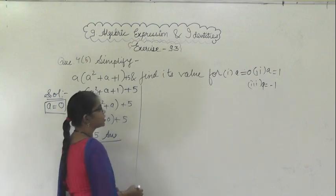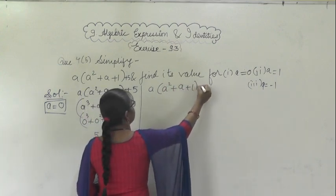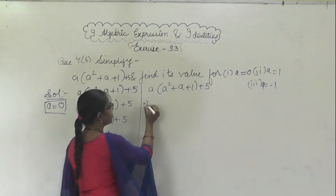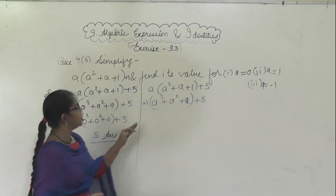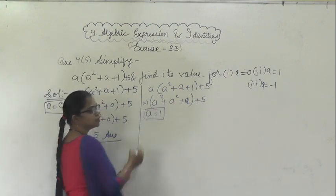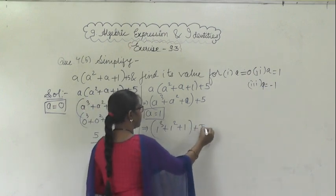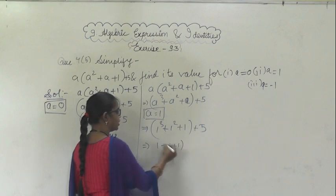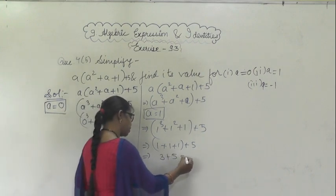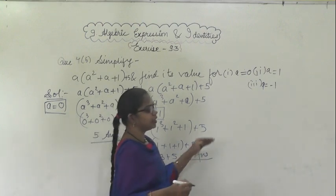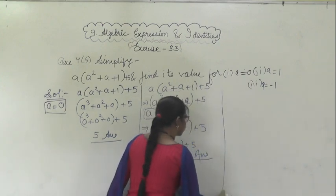For the second condition, a = 1: write the expression a³ + a² + a + 5 and substitute. We get 1³ + 1² + 1 + 5, which equals 1 + 1 + 1 + 5 = 3 + 5 = 8. So the answer is 8.